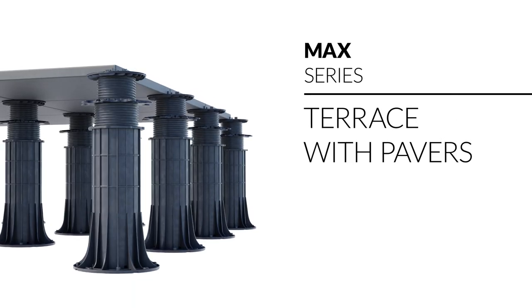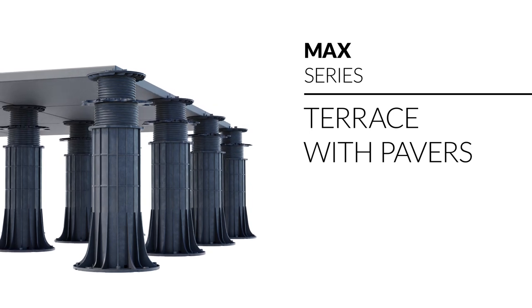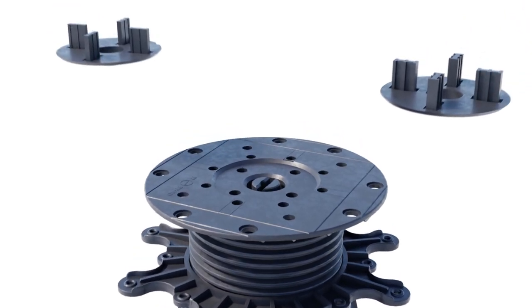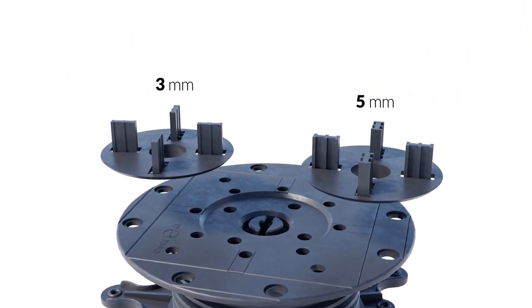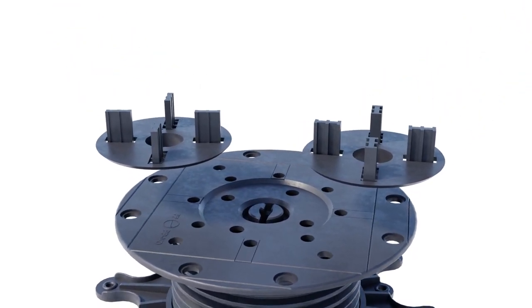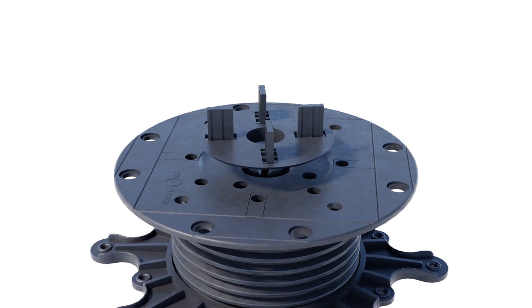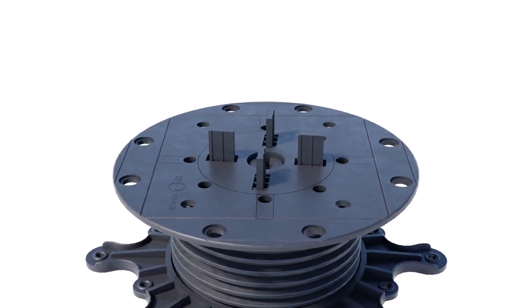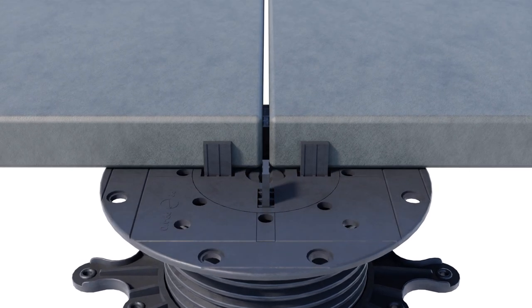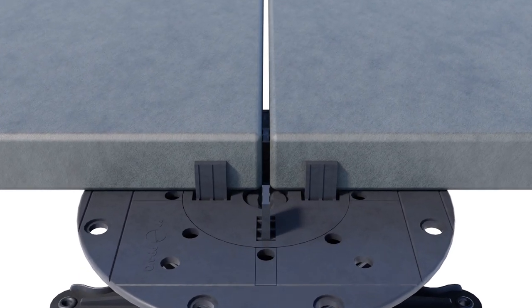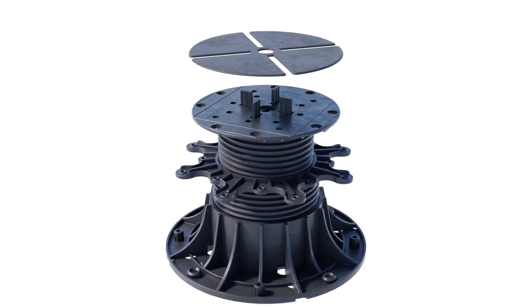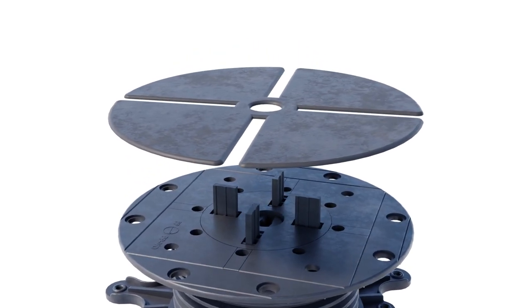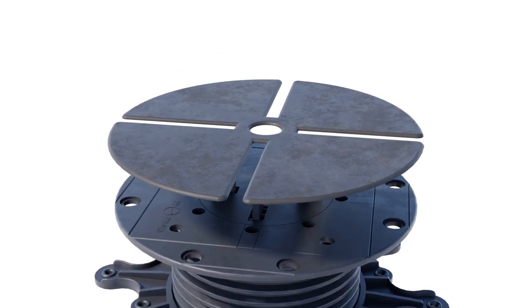When constructing an elevated terrace with tiles, gap spacer discs are used. Gap spacer discs determine the gap between the tiles. Two gap width options are available: 3 or 5 mm. A rubber shim with a thickness of 1.5 mm is used to prevent unwanted noise while walking on the elevated terrace.